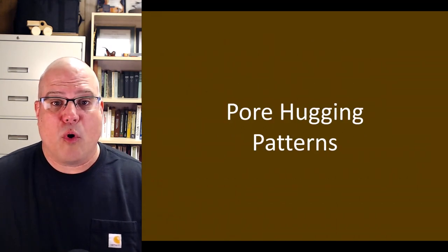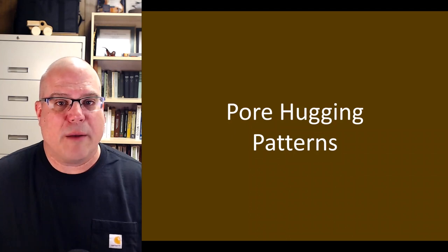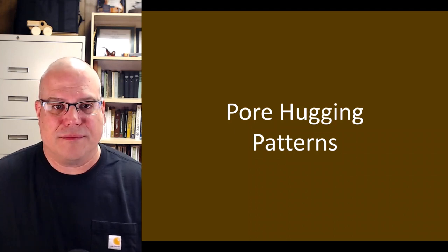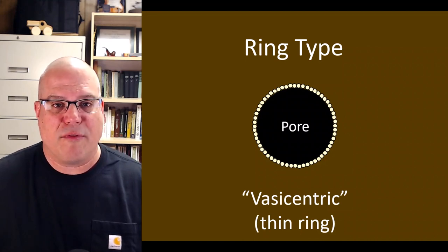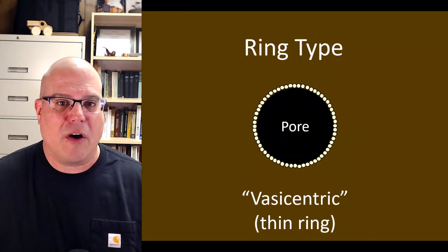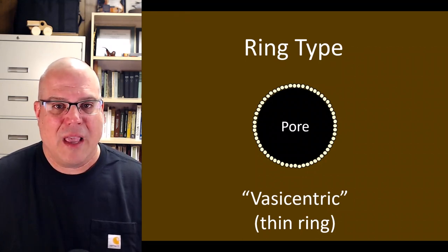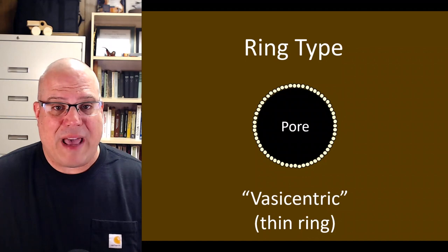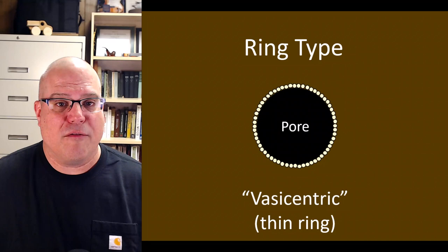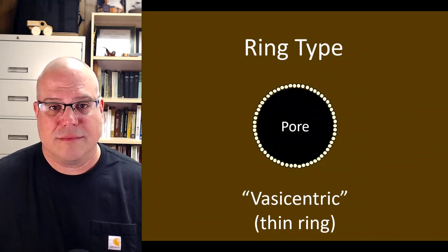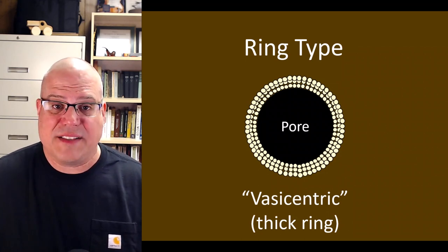Let's start by looking at a few of the pore-hugging parenchyma patterns. The first kind consists of lighter-colored parenchyma cells surrounding a pore in the shape of a ring. This ring type we call vasocentric. As with most parenchyma patterns, there is some variation within types — vasocentric parenchyma can form a thin ring around a pore or a thicker ring. In either case, we call it vasocentric.